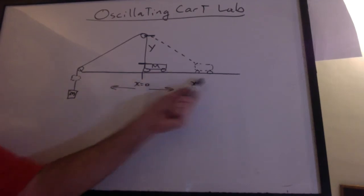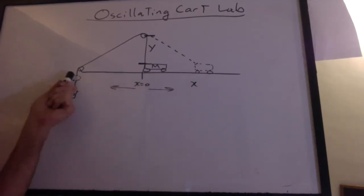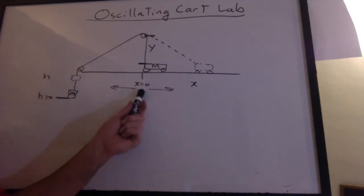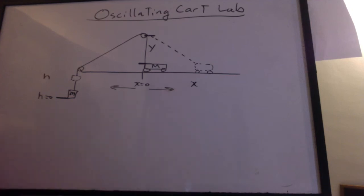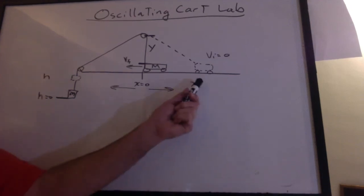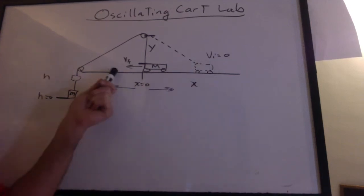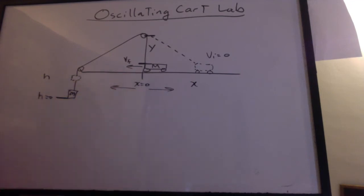If we pull the cart back the hanging mass rises. We'll say the distance up is H. Distance to the right will be X. We're going to release the cart from rest. What will be the final velocity when it reaches the equilibrium position?